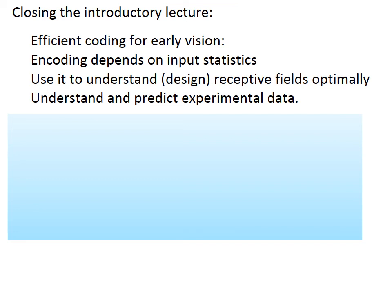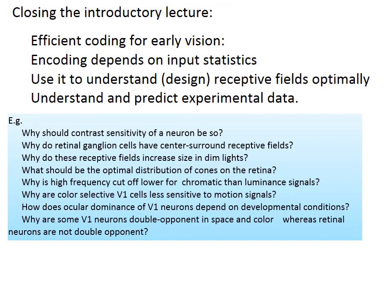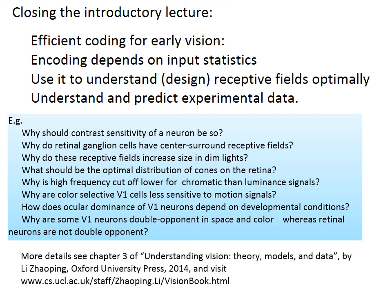This lecture is a very brief introduction to efficient coding. Ocular coding is just an example to demonstrate how coding depends on input statistics, and how we can understand and predict experimental data from a theoretical principle. Given the time constraint of a single lecture, I omitted many analyses and derivations, and instead used intuition and analogies to make various links. There are many other questions we can ask and answer through efficient coding, and these materials and various other details can be found in the referenced book.